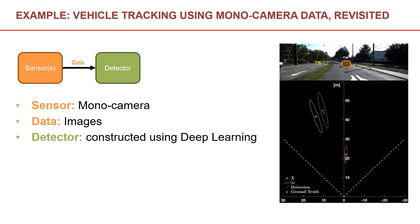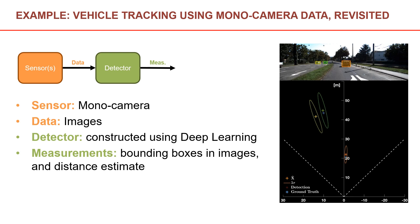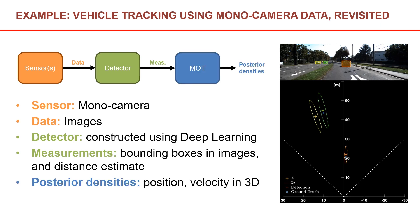The detector employed here was constructed using deep learning. Deep learning is outside the scope of this course, but it's something quite interesting to look into after studying this course. The output from the deep learning detector is bounding boxes for the vehicles in the image, indicated by colored rectangles that fit snugly around the cars. In addition to each bounding box, the deep learning detector also outputs a measurement of the distance from the camera to the detected car, and from the location of the bounding box in the image, we can figure out the bearing from the sensor to the car.